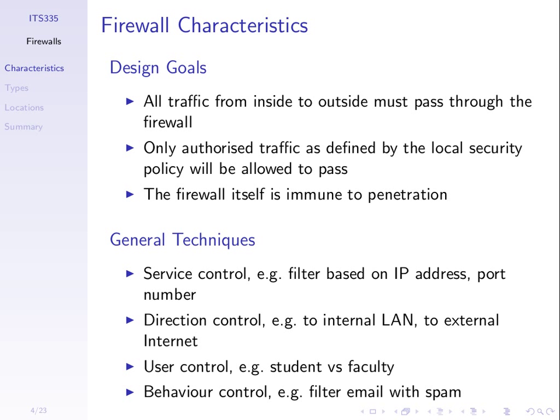The other form of control is direction control — you may want to do things depending upon the direction of traffic. For example, set up the firewall such that people from outside can access no web servers internal to SIT, but people inside SIT can access all web servers out on the internet. So depending upon the direction — outside to in, or inside to out — we may have different requirements.